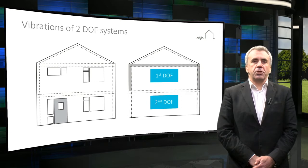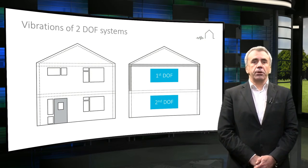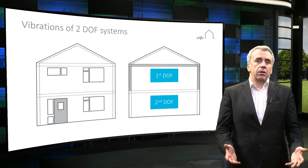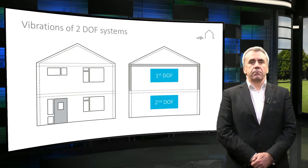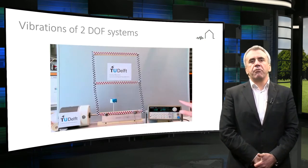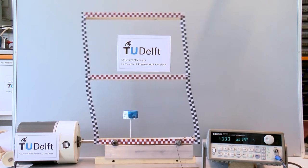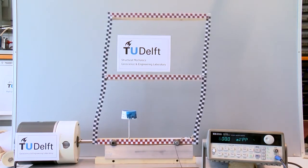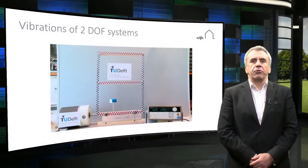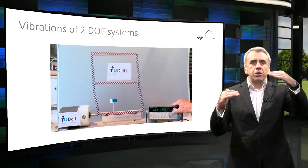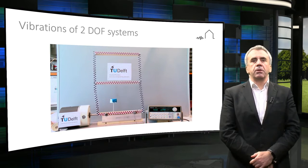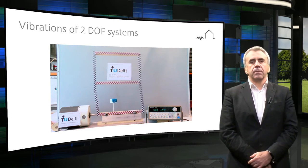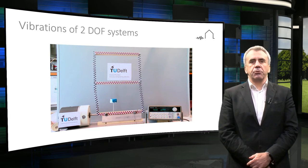Often single degree of freedom models do not suffice in describing vibrations of structures. For example, if we need to understand and model the dynamics of a two-story building, a two degrees of freedom model is necessary for each floor. Let us look at a movie, again small scale, that gives a flavor of how a two-story building vibrates when excited at the base. We can see that the two-story building does not necessarily move in phase, and not only the amplitude but also the shapes of vibration depend on the excitation frequency — a feature that single degree of freedom systems do not have.